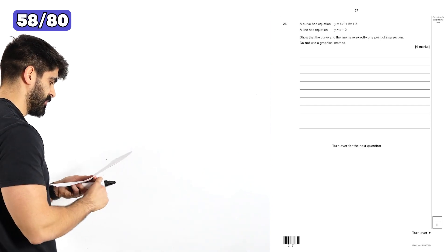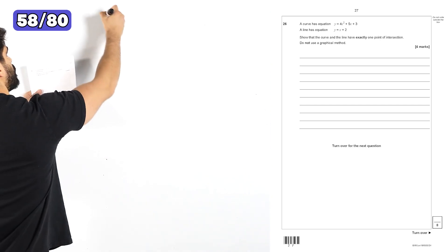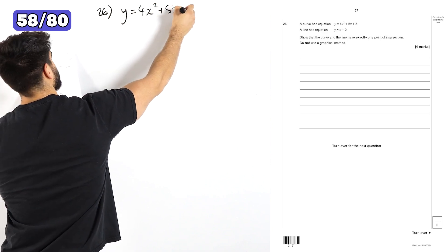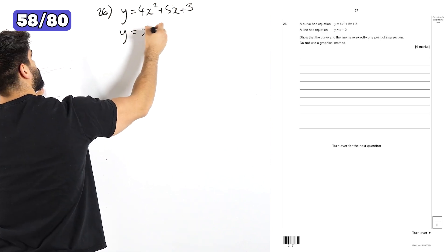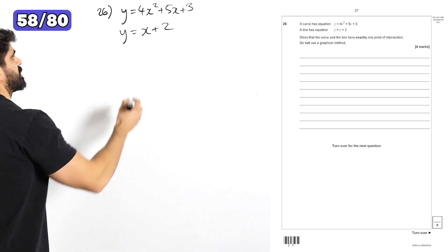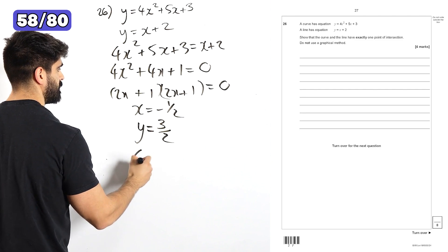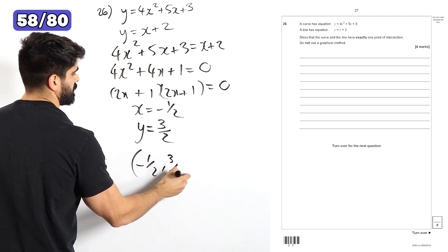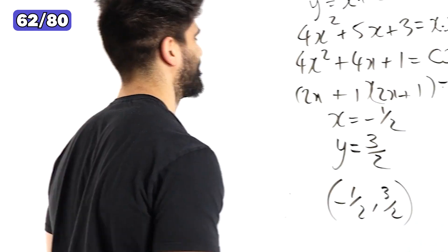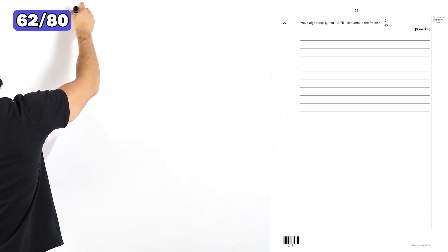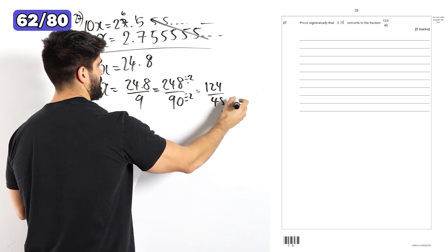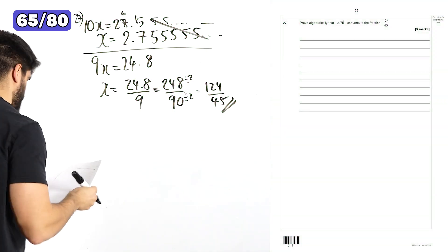A topic that I've just taught my students. A curve has equation y is 4x squared, 5x plus 3, y is x plus 2. Should the curve and the line have exactly one point of intersection? So it's just simultaneous equations. So the only solution is minus a half, 3 over 2. Quick maths, you know, let's go. Question 27. Prove algebraically that 2.75 recurring is 124 over 45. And that is proved. That's a secured 3 marks.